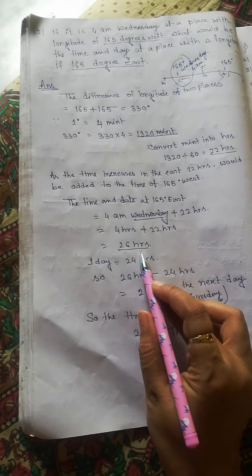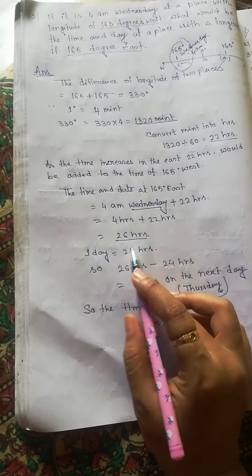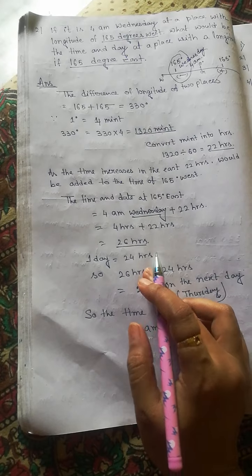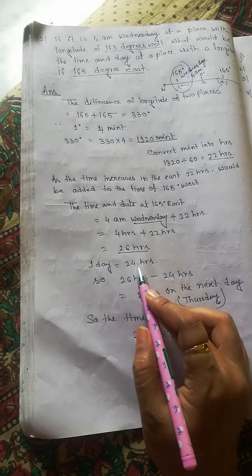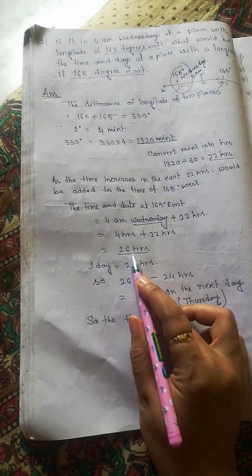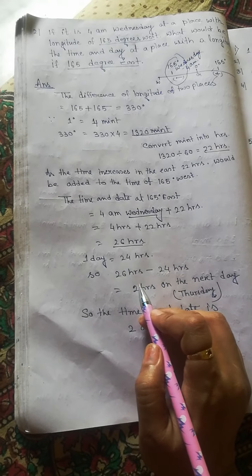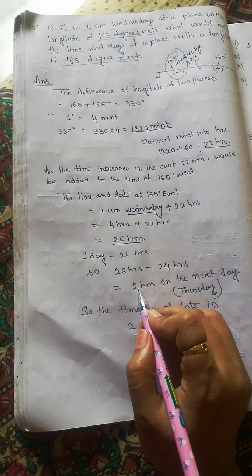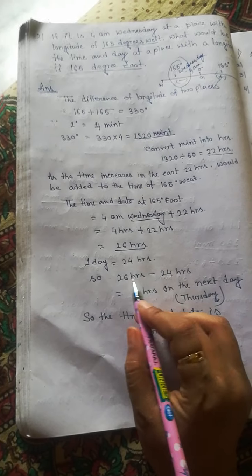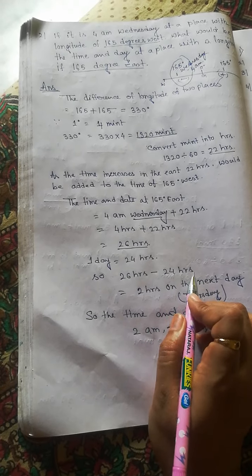But you know one day equals to 24 hours, so you have to subtract: 26 hours minus 24 hours, then the answer is 2 hours. 26 hours minus 24 hours equals to 2 hours.